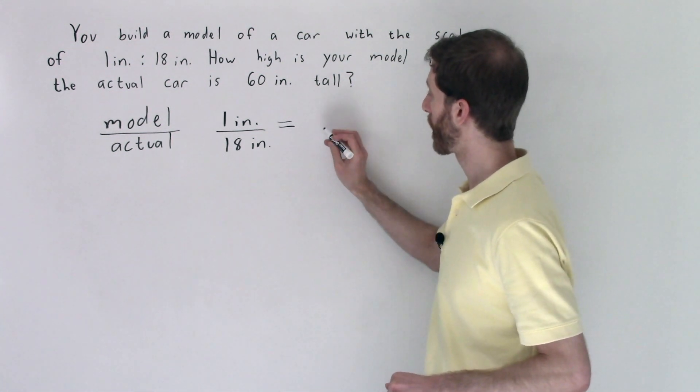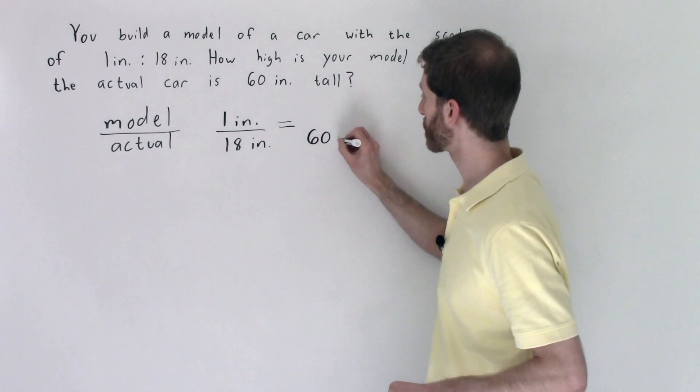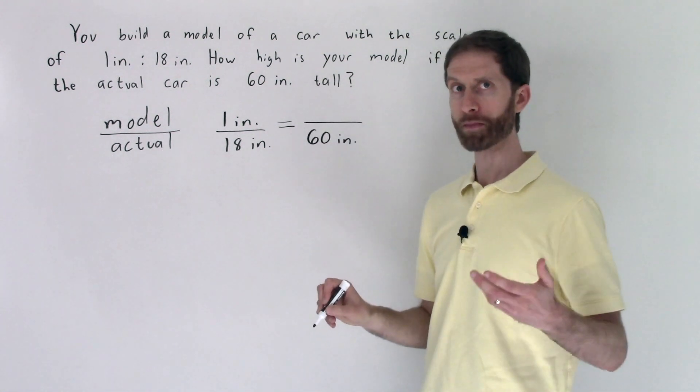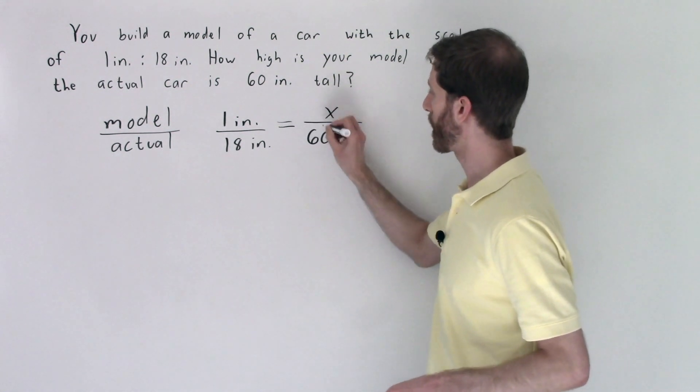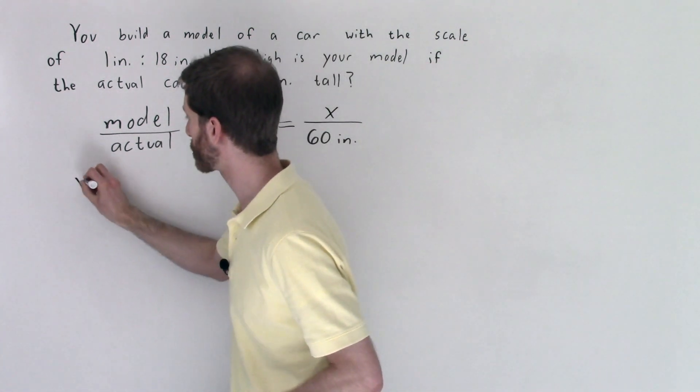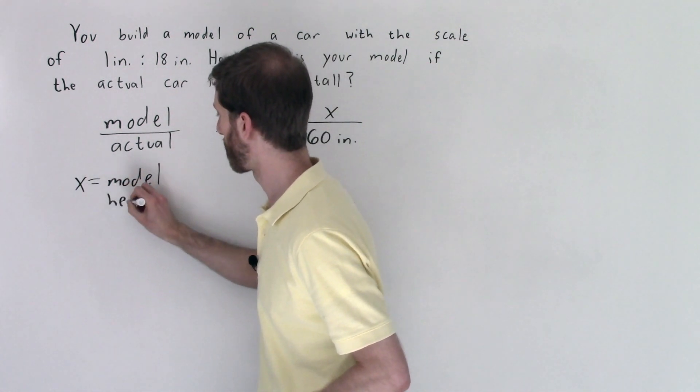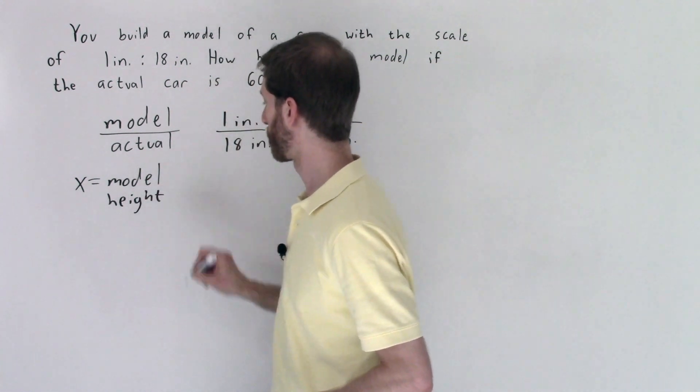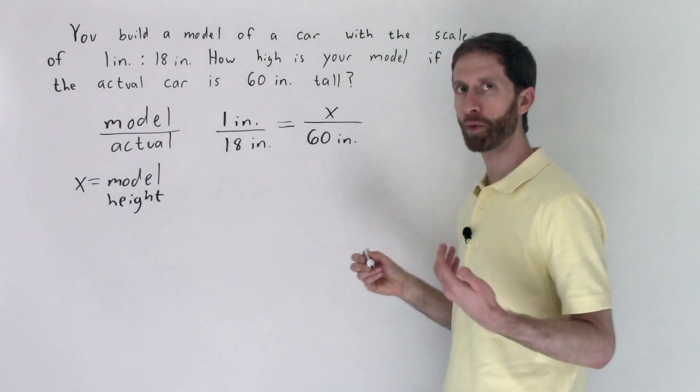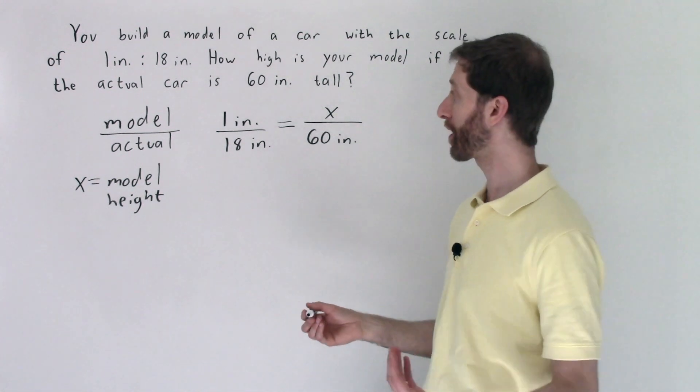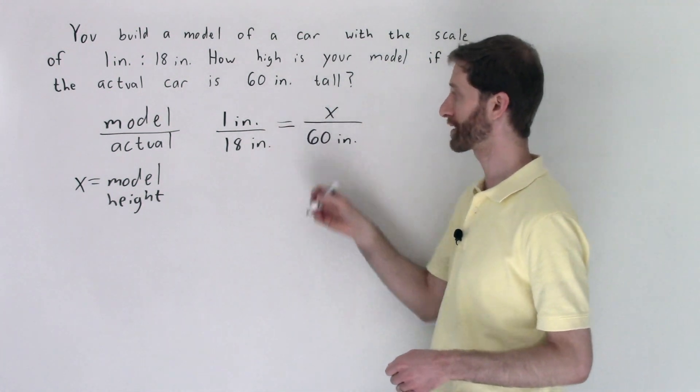So we know that this ratio will be equal to another ratio where the actual height is 60 inches but the unknown amount is the model. So I'll put x right there and we'll define our variable where x equals the model height. So once we have our proportion all set up with corresponding parts, model to actual equals model to actual, we just need to do our damage with math by solving the proportion.